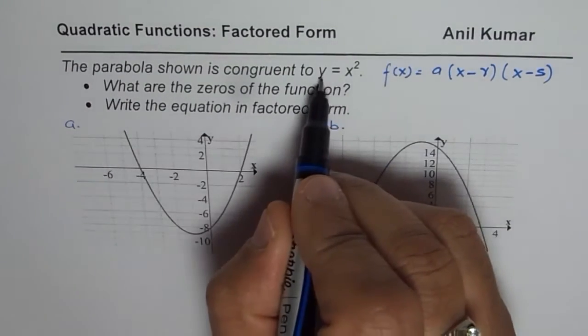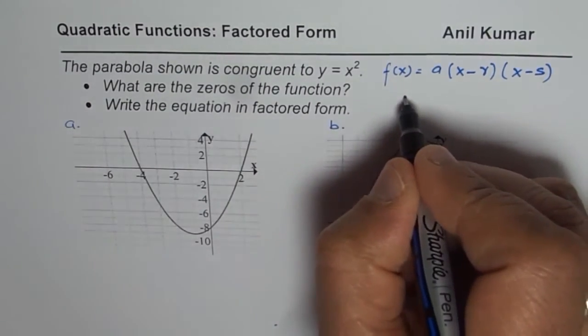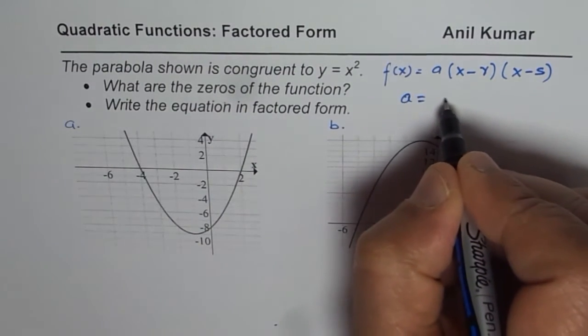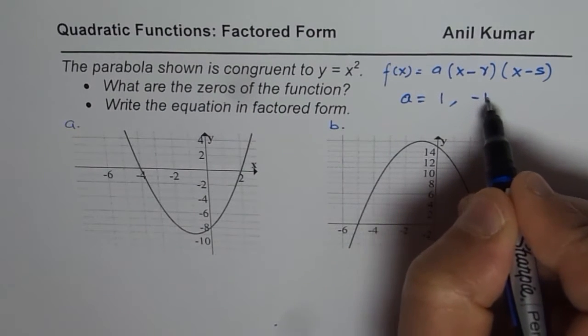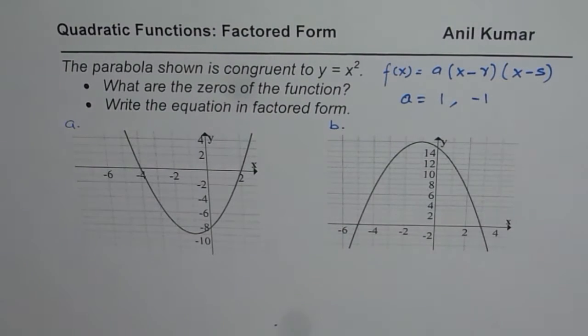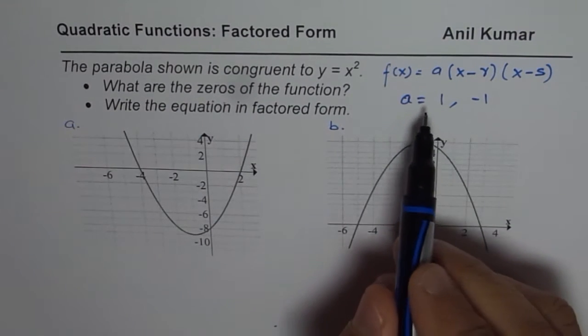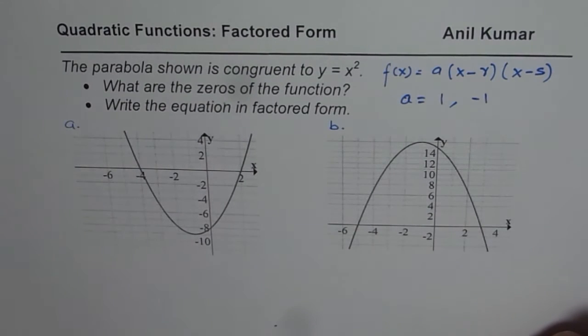Since we say it is congruent to x squared, that means A value is 1. Remember, it could be minus 1 also. Even then the parabola will be congruent. You can flip it or reflect it on x axis and then overlap. So I hope that will help you to get the right answer.